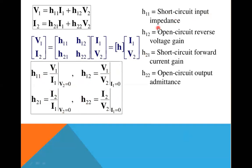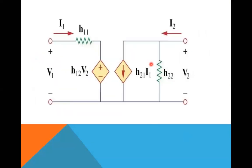h11 is the short circuit input impedance. h12 is the open circuit reverse voltage gain. h21 is the short circuit forward current gain. h22 is the open circuit output admittance. These are the four hybrid parameters. The equivalent circuit for H parameters has input voltage v1, output voltage v2, input current i1, output current i2, with components h11, h12, h21, and h22 labeled accordingly.